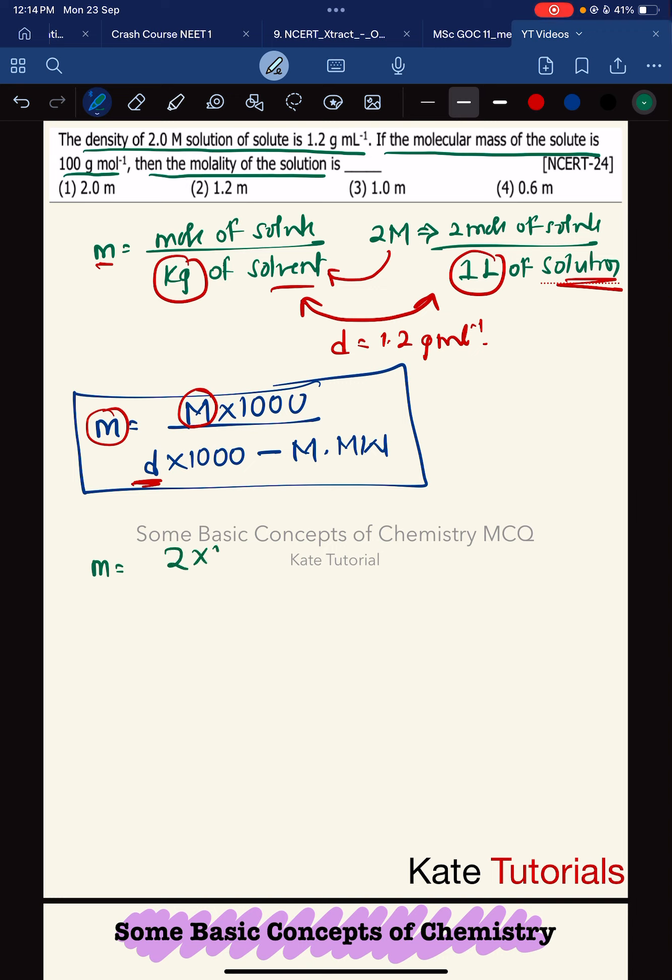Molality is 2 times 1000 divided by density 1.2 times 1000 minus molarity 2 times molecular weight 100.